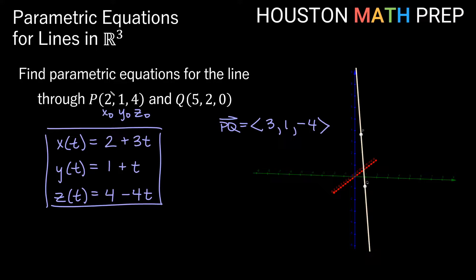You'll notice our point (2, 1, 4) occurs when the t terms are all zero. If we plug in t equals 0, each t term goes away and we're left with x equals 2, y equals 1, and z equals 4. So when t equals 0 we get the point x0, y0, z0, which confirms that P is on the line at t equals 0 on this trajectory.